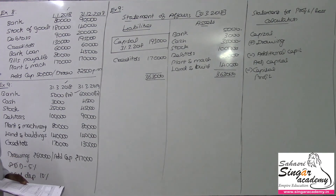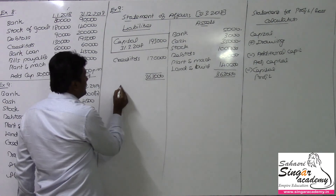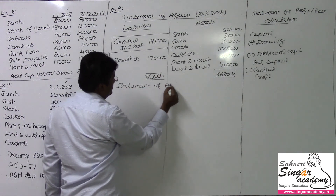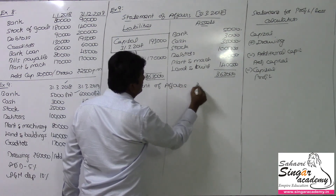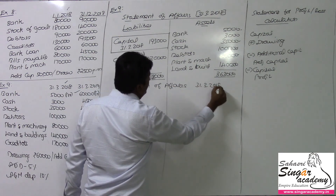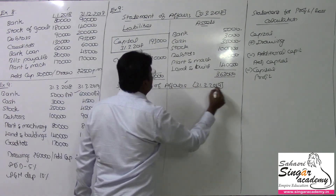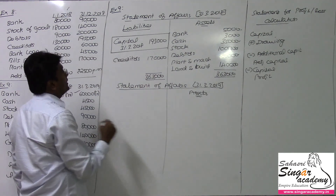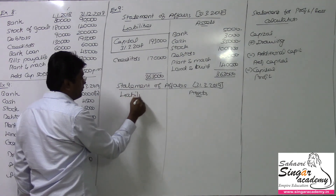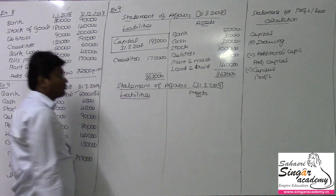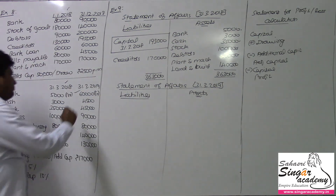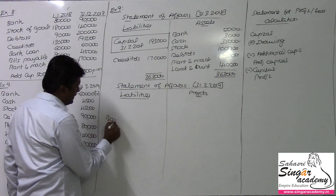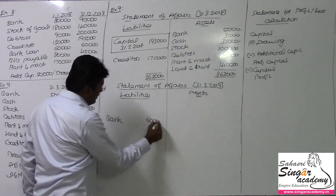So we now open the statement of affairs for the next year end. Statement of affairs for 31-3-2019. It resembles a balance sheet, but we don't follow strictly the procedure to be followed in the case of a balance sheet. The bank has a credit balance, so it goes to the liability side as an overdraft — bank balance on the liability side: 60.